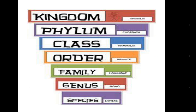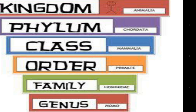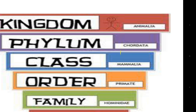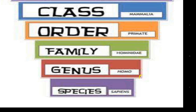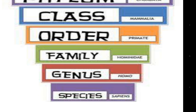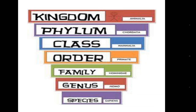To complete the classification of humans: Kingdom is Animalia, Phylum is Chordata, Class is Mammalia, Order is Primate, Family is Hominidae, Genus is Homo, and Species is Homo sapiens. If you combine the genus and species names, you get Homo sapiens, which is the scientific name of humans.